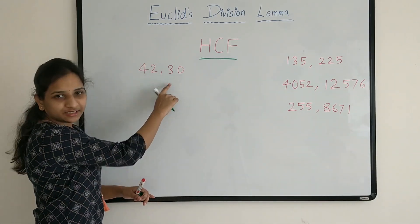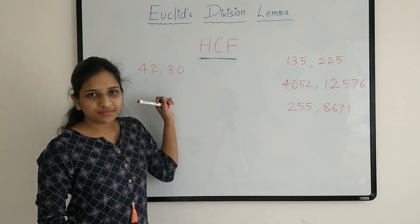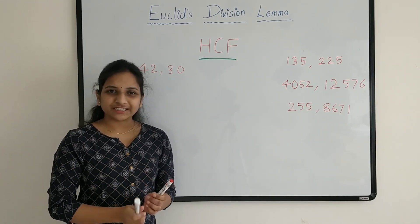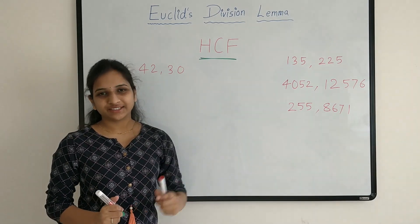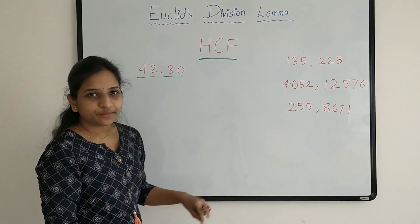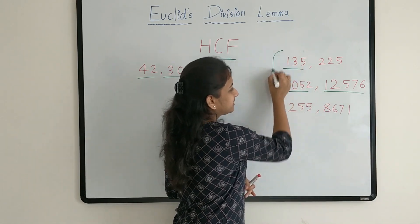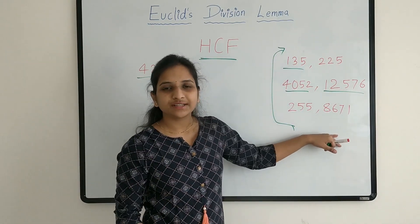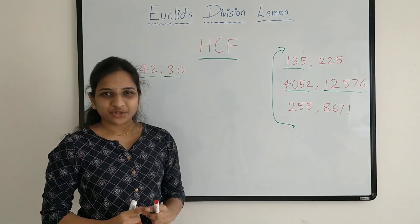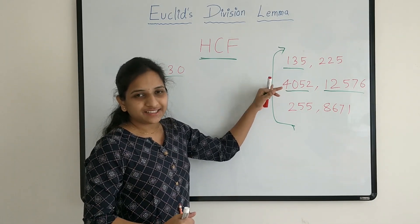Here I have taken two numbers 42 and 30. As these numbers are small numbers we can find the factors and find HCF. Now if the numbers are small, finding factors is easy. But what about the big numbers — 3 digit, 4 digit, 5 digit numbers? Finding the factors for these numbers is tiresome. Here Euclid's division lemma comes into the picture. This method will give you an easy approach to find HCF of big numbers.